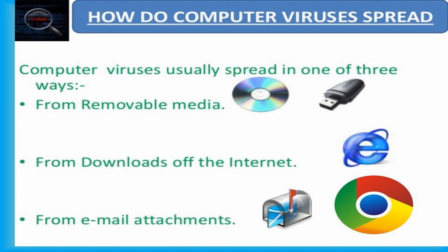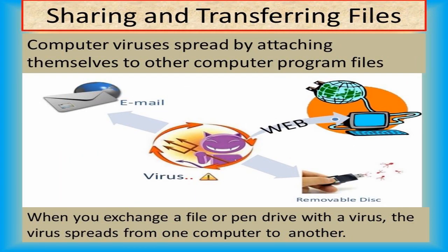How do computer viruses spread? Computer virus programs are self-replicating programs resulting in the loss of speed and destruction of data. Computer viruses can be spread in one of three ways: either by using a removable storage device, or from the internet while downloading, or through email attachments. Sharing and transferring files through a flash drive is a very common practice today. If this drive contains a virus, it will infect the computer with which it is attached. Similarly, if the flash drive is inserted in an infected computer, then the flash drive will also get that virus.